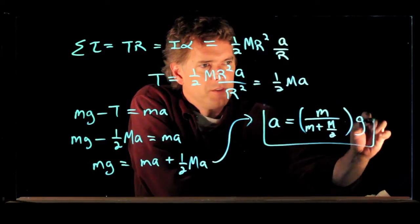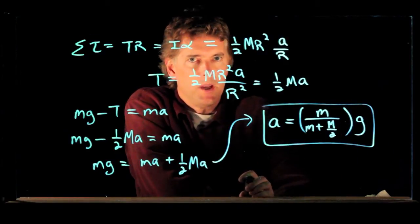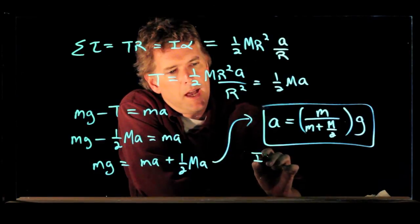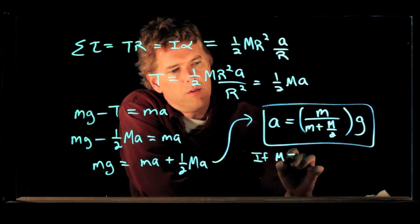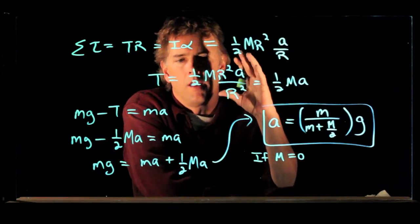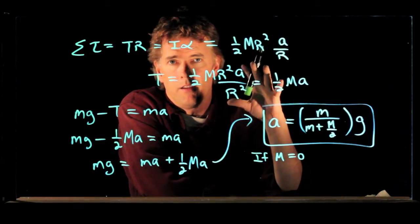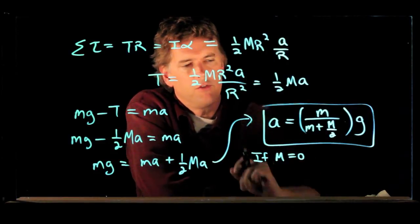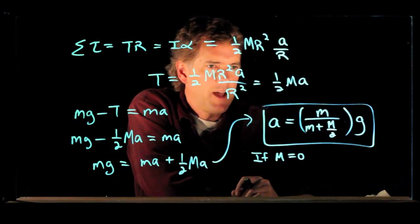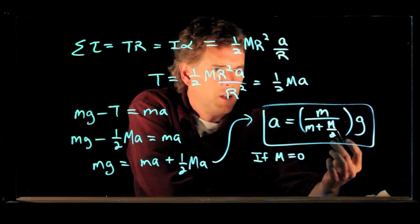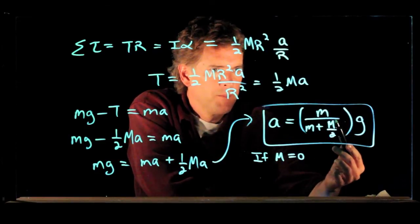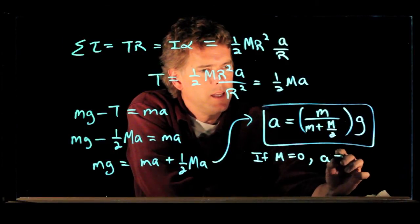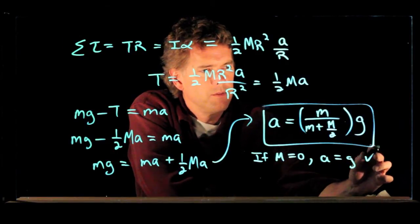So let's just look at some of the limits and see if it makes sense. If big M goes to zero, then it's kind of like the pulley isn't even there. And if the pulley isn't even there, then the box should fall at G. Is that what happens? Big M goes away. We got little m over little m. That's one. And so yes, A equals G. Good.